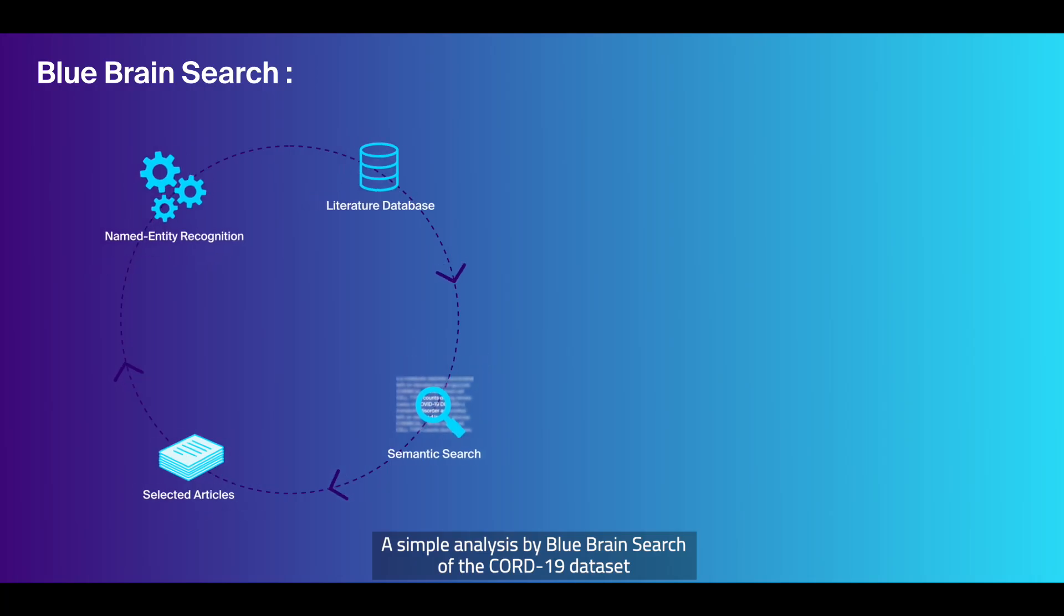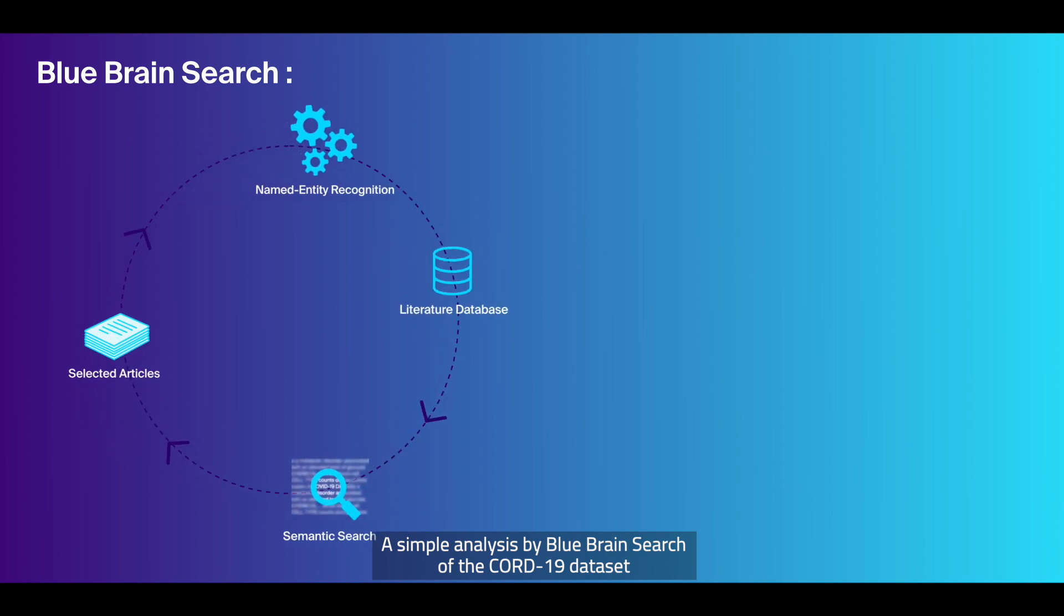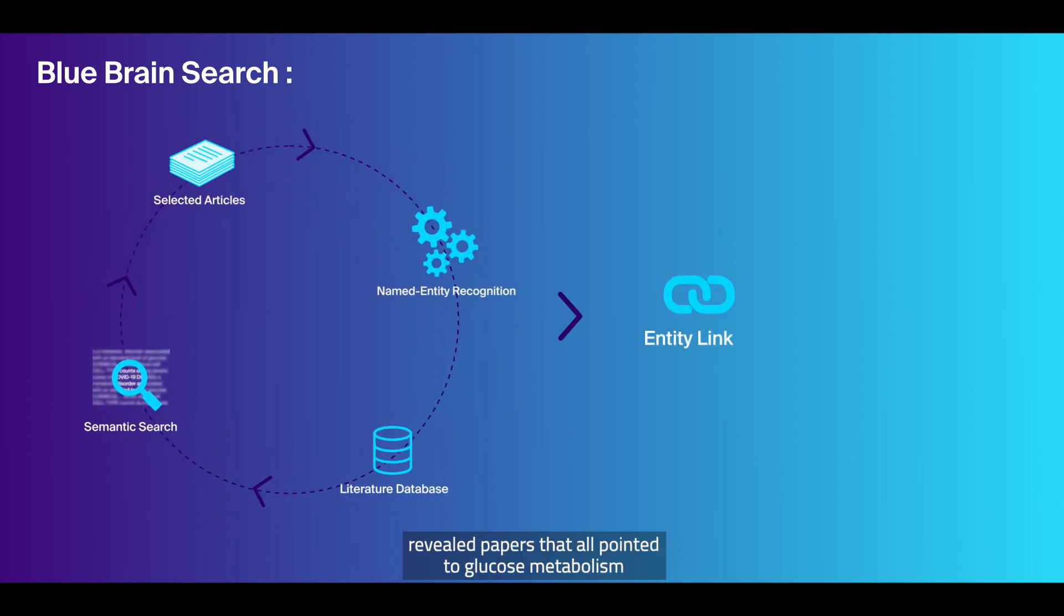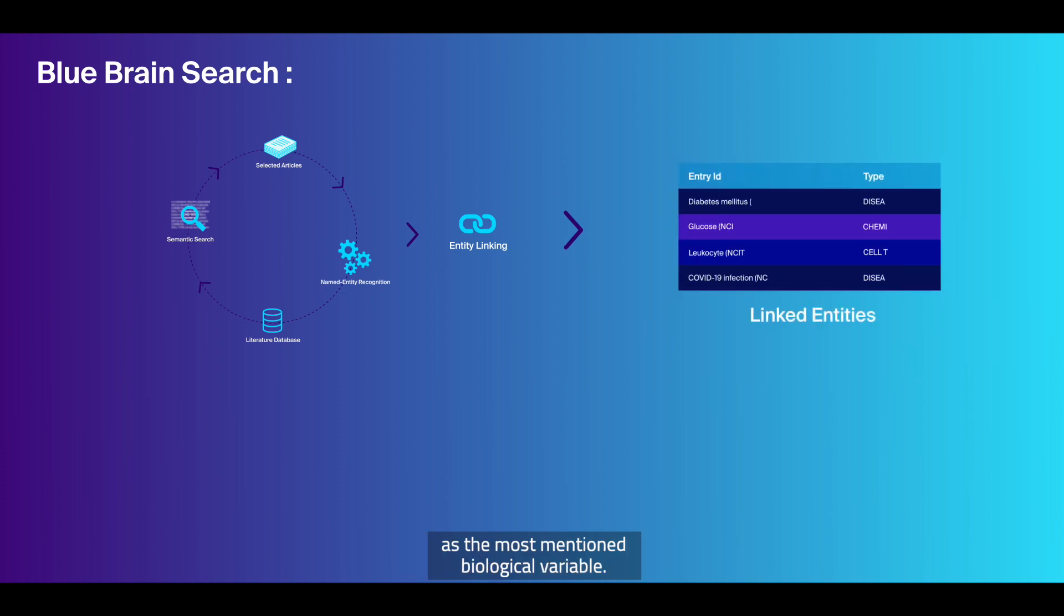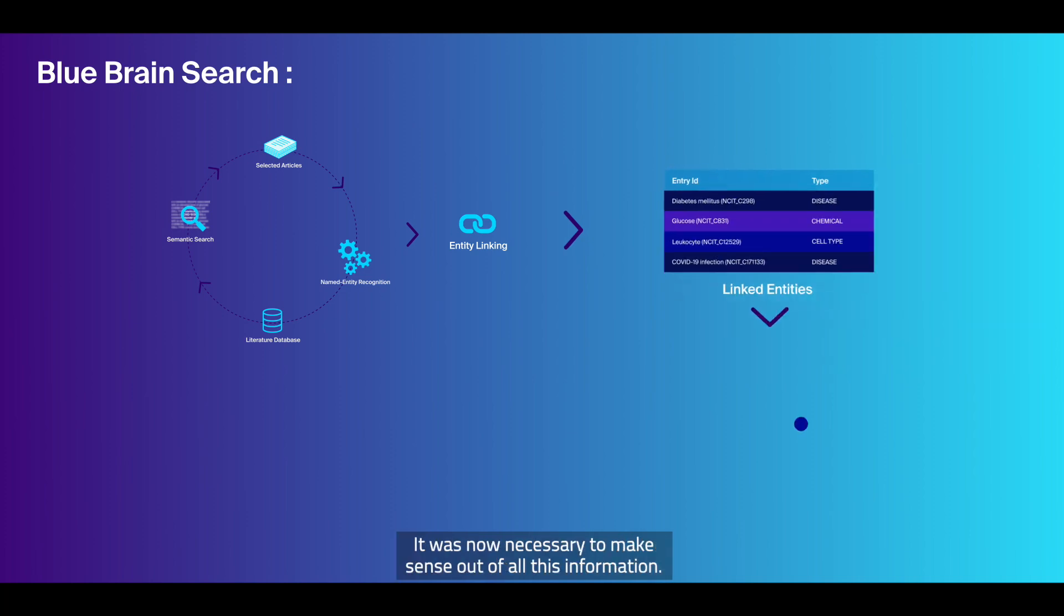A simple analysis by BlueBrain Search of the CORD-19 dataset revealed papers that all pointed to glucose metabolism as the most mentioned biological variable. It was now necessary to make sense out of all this information.